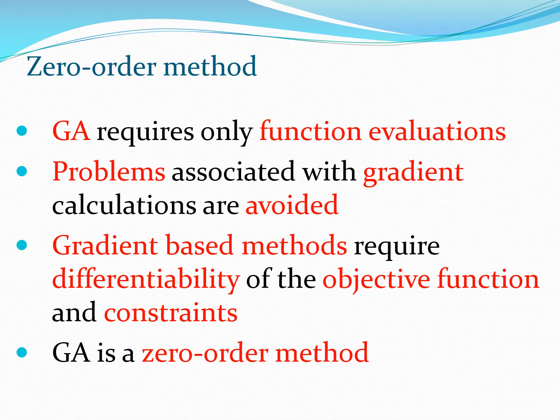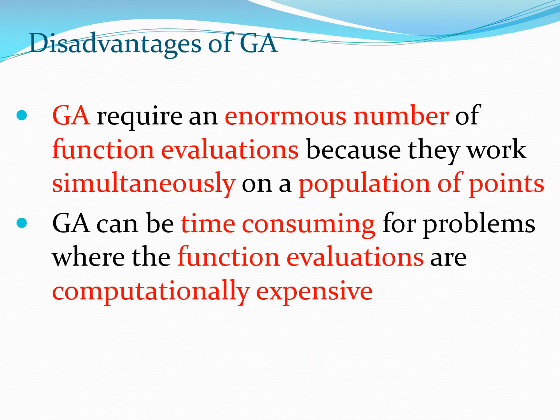The crux of this discussion is that GAs are also known as zero-degree methods, in contrast to first-degree or second-degree methods where you use gradient or Newton methods with Hessian information. Here you simply do not use derivatives at all. One of the problems with GA is that you need to do a large number of function calculations because GA works on a population of points.